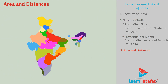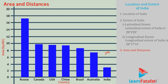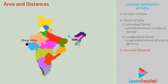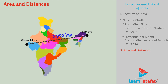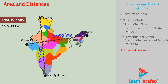The area and distances. The total land area of India is 3.28 million square kilometers. With such a huge area, India is the 7th largest country in the world. The distance from the western point Guhar Mota in Gujarat to the eastern point Kibithu in Arunachal Pradesh is about 2,993 kilometers. The distance from the northern point Daftar in Kashmir to the southern mainland point Kanyakumari is about 3,214 kilometers. The land boundary of India is about 15,200 kilometers, and the coastal length is about 7,517 kilometers.